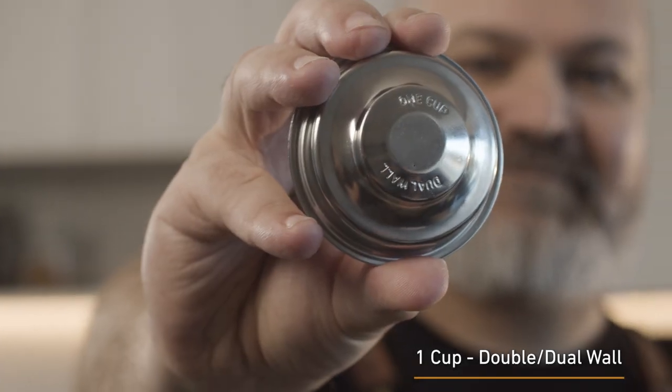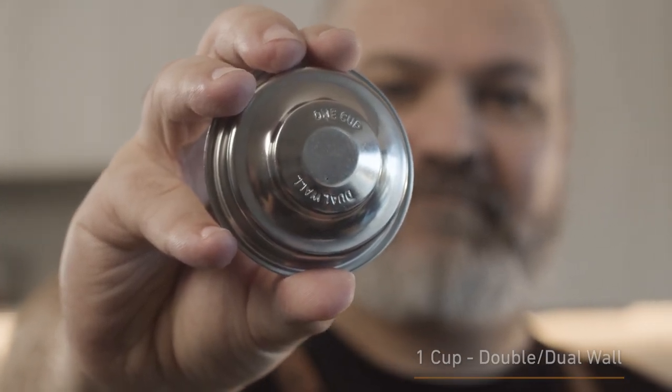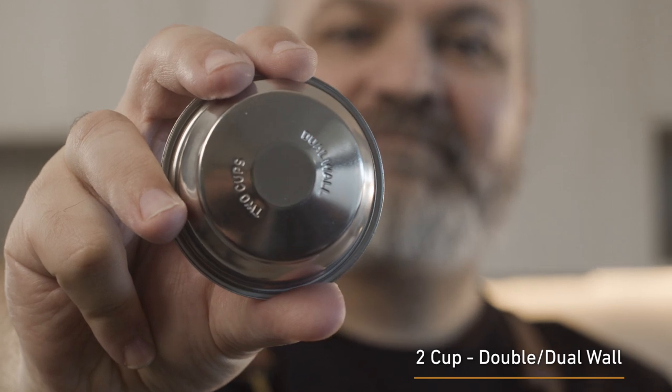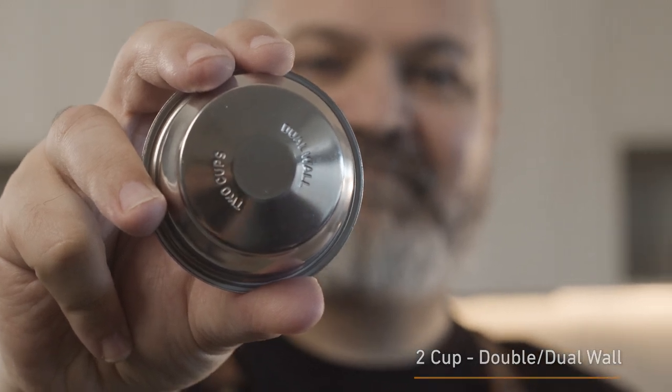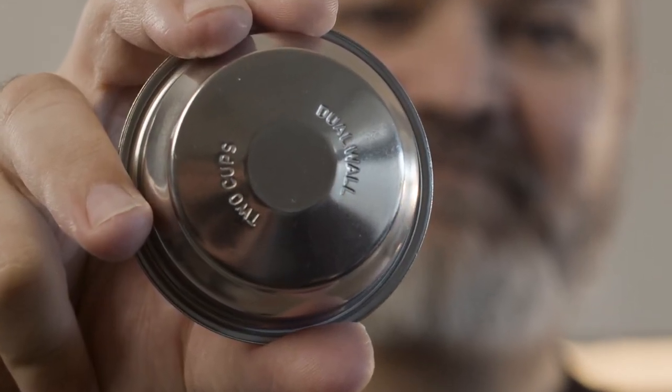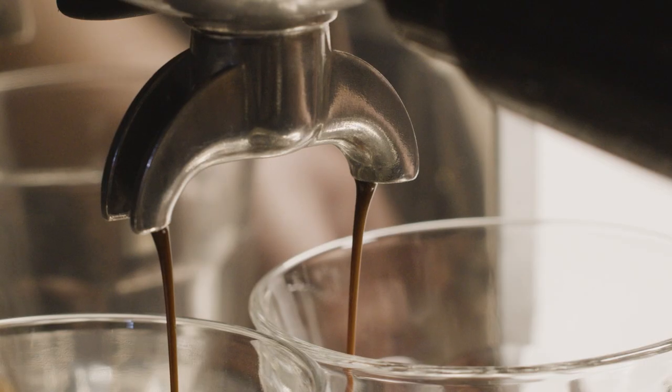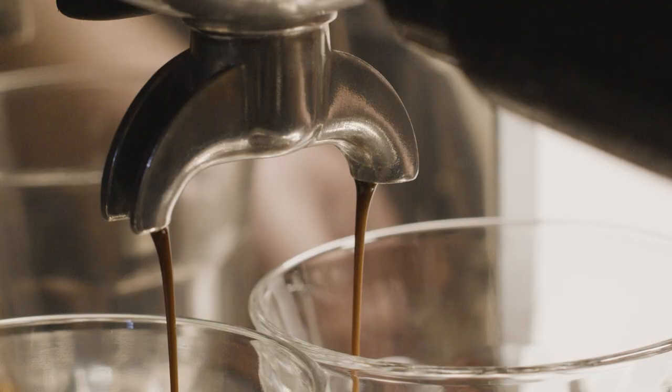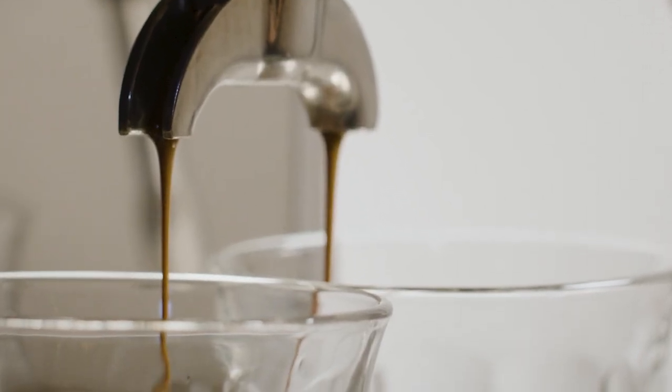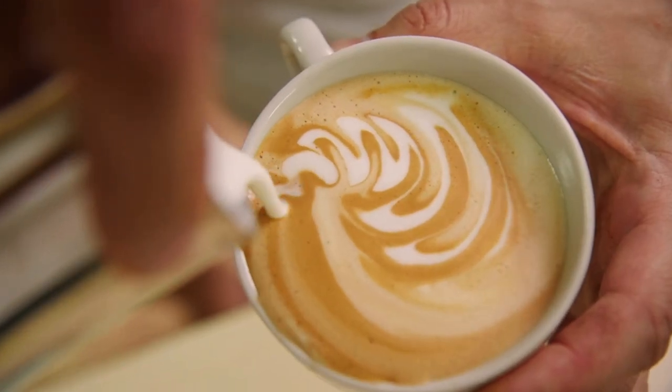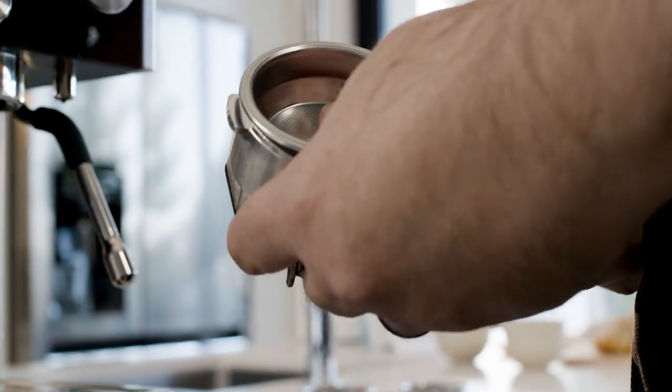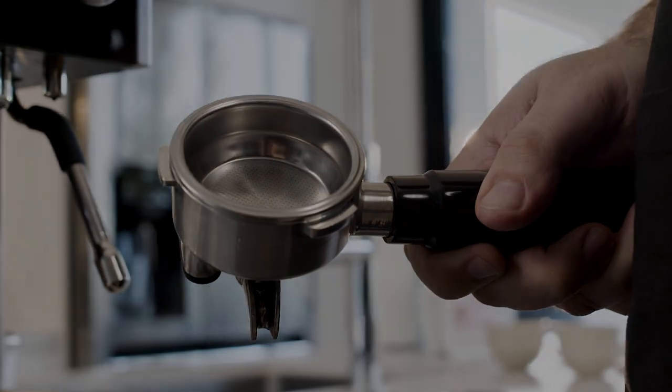The other set of baskets are double wall, and like the name suggests these baskets have two walls: one standard layer of mesh and another solid layer with a small hole. A double wall filter basket will enhance the crema and improve the overall consistency of your coffee. These baskets are best to use if you're a beginner in your manual coffee machine journey.